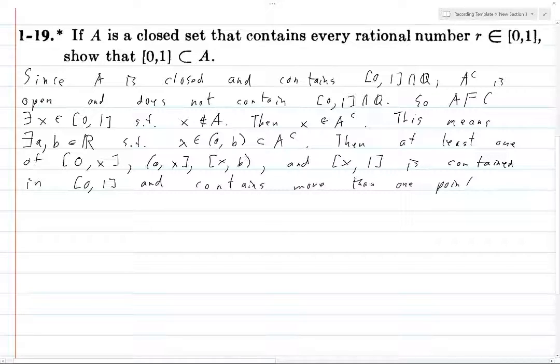Then at least one of these is contained in [0,1]. So basically, the point is we're going to get a line segment that's contained in [0,1], and that's going to yield our contradiction.